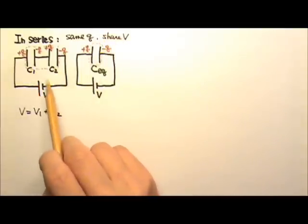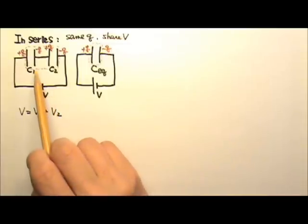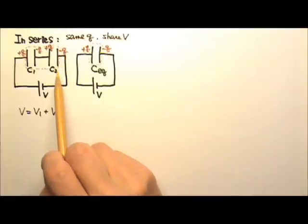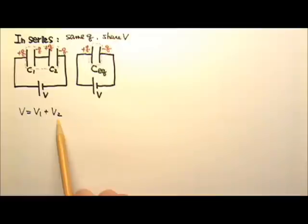The total potential difference here equals to the potential difference between the two plates of C1 plus the potential difference between the two plates of C2. So V equals to V1 plus V2.